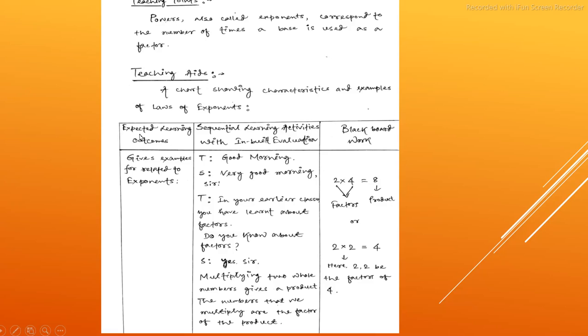You have to write heading as expected learning outcomes. And second column, sequential learning activities with in-built evaluation. And third column, blackboard.